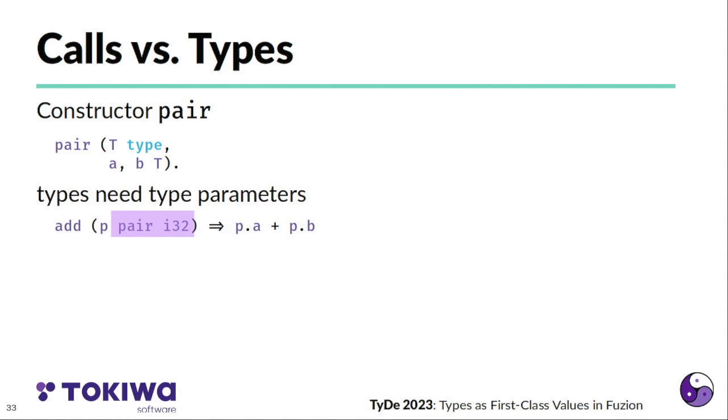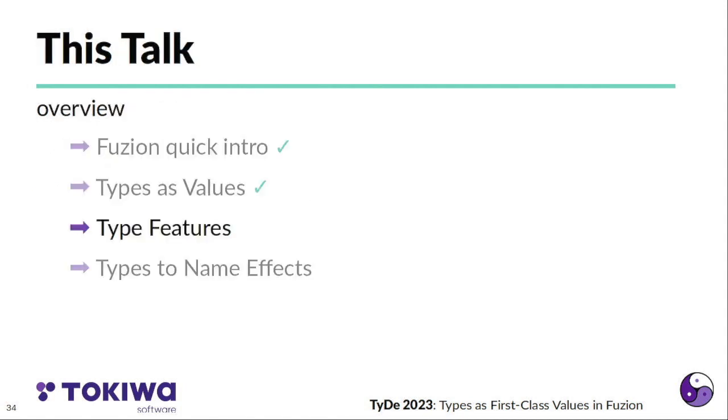In contrast, if we use a feature as a type, like here in a function add with an argument P, which is a pair of two 32-bit integers, we have to provide all the type parameters. So here we have pair with I32. So if a feature is used as a type, the value arguments are left out and the type parameters are actually presented or given. So this much to how within calls, types and value arguments are treated in a very similar way.